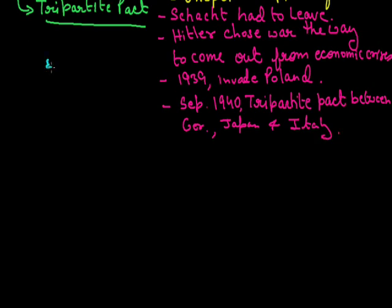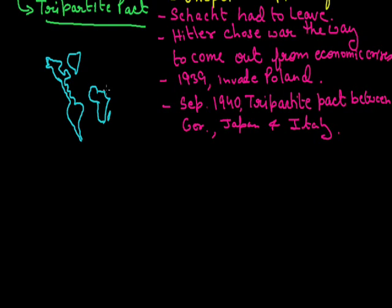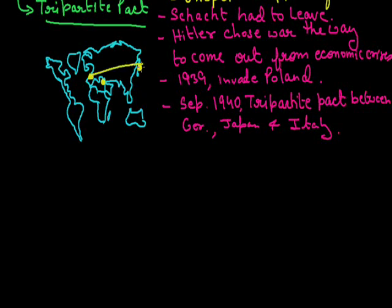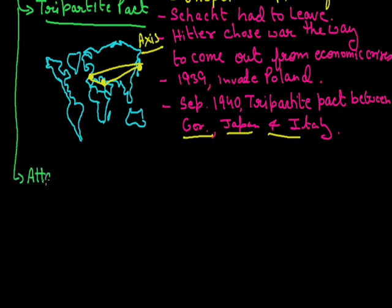This is how we see a Tripartite Pact between three nations — Germany, Italy, and Japan — who came together and made an agreement famously known as the Tripartite Pact. These three countries from different parts of the world are known as the Axis Powers. On the other side were the Allied Powers of Britain, France, USA, and Russia.